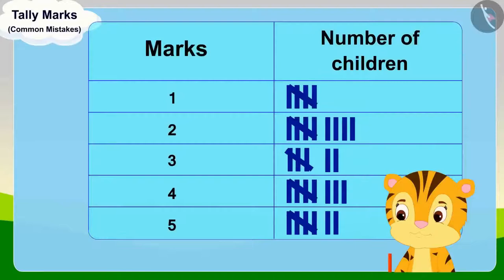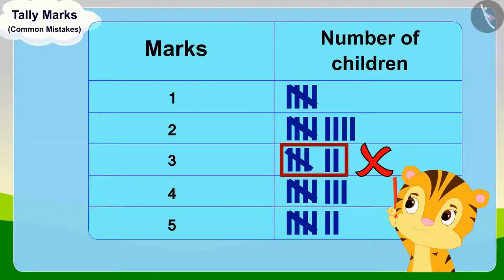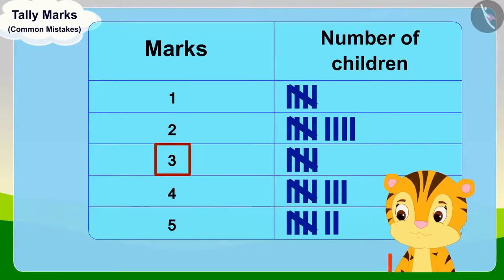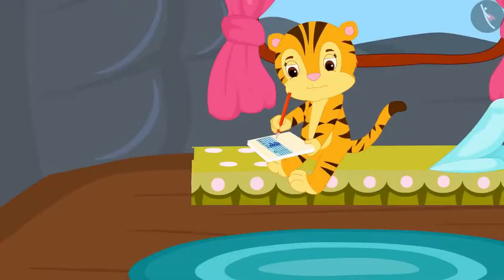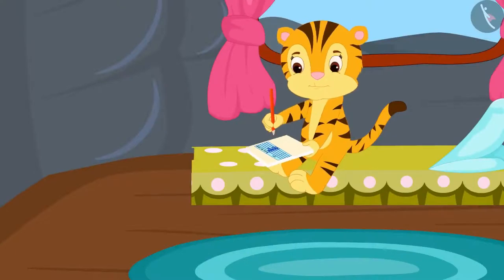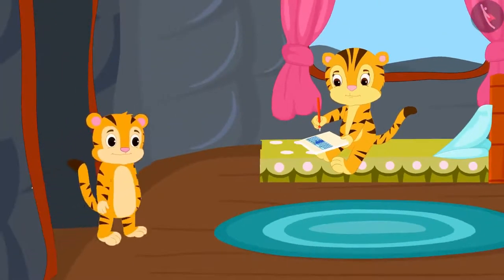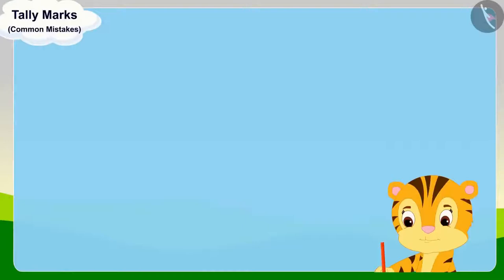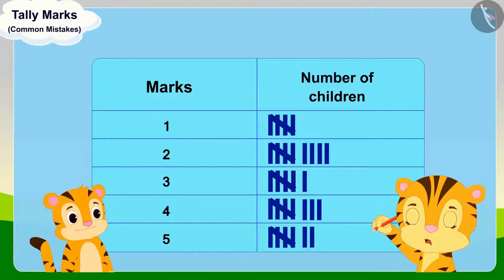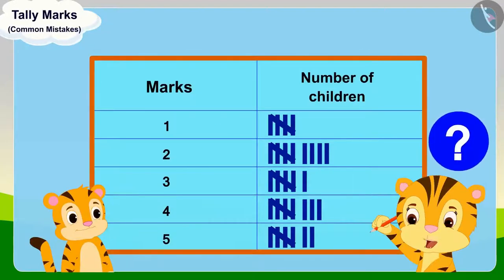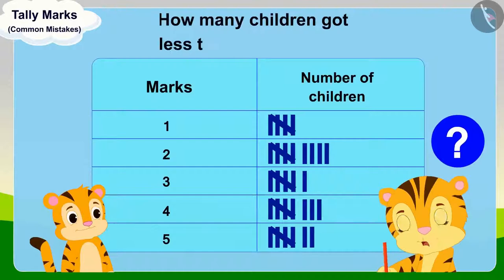Mrs. Khan realized her mistake and immediately corrected the tally marks for three marks. When her table was completed, Shere Khan came there. Mrs. Khan showed him the table and asked, can you tell me how many children got less than three marks?